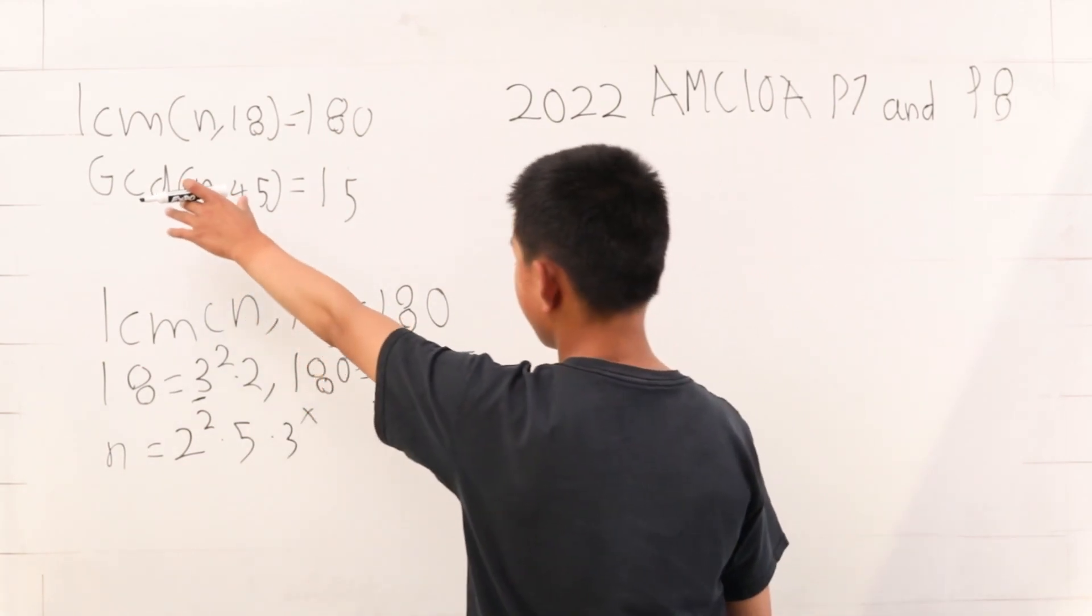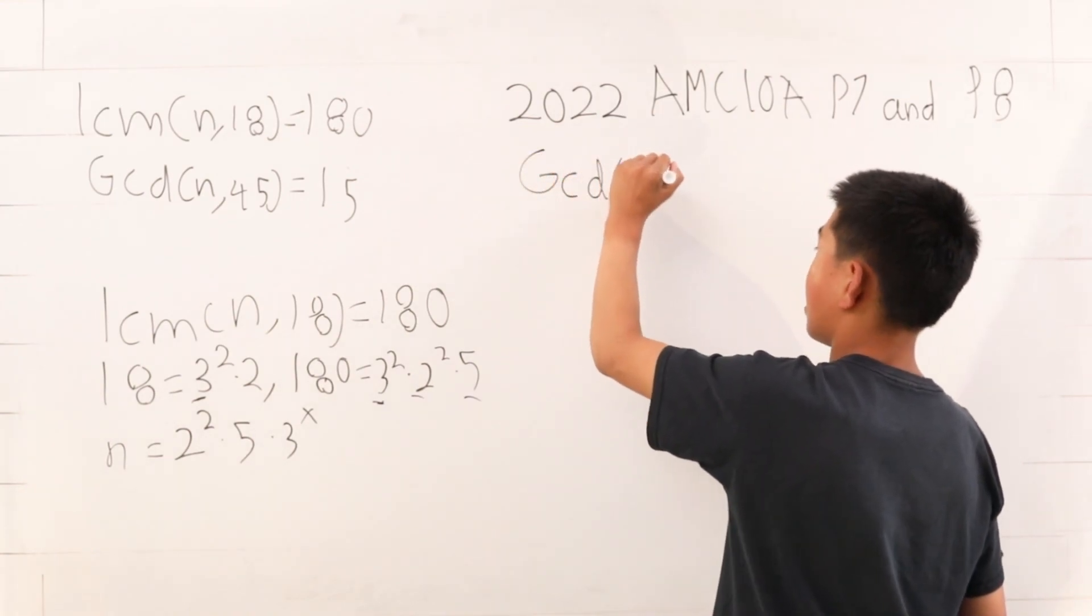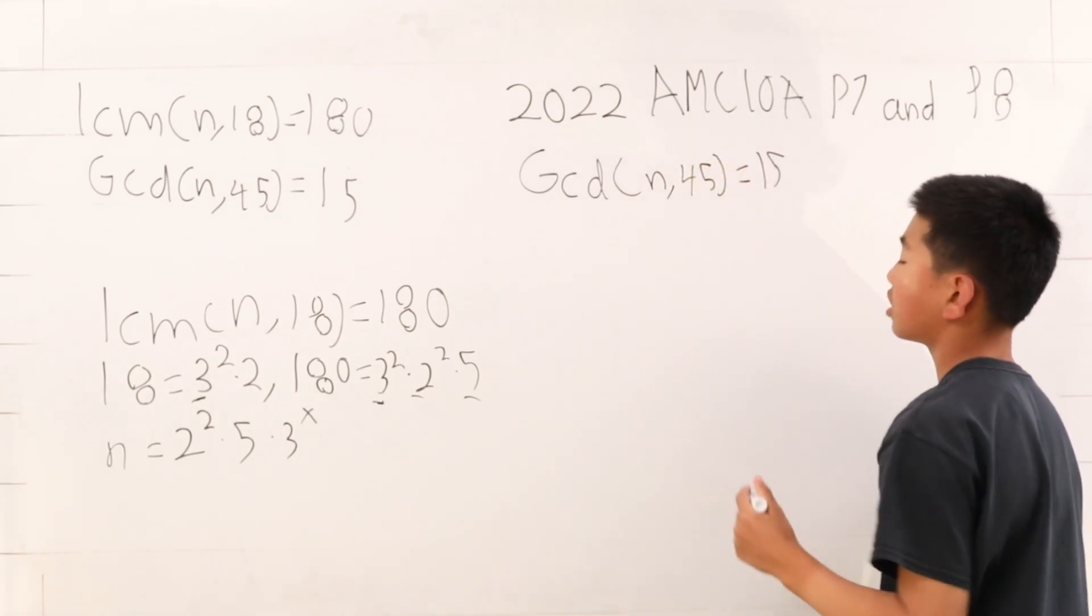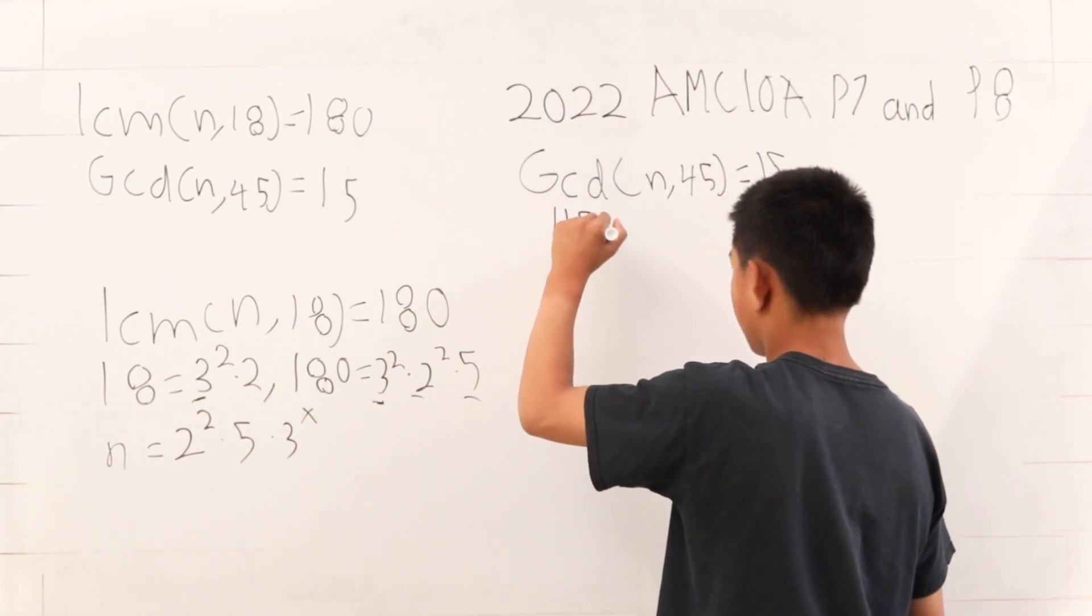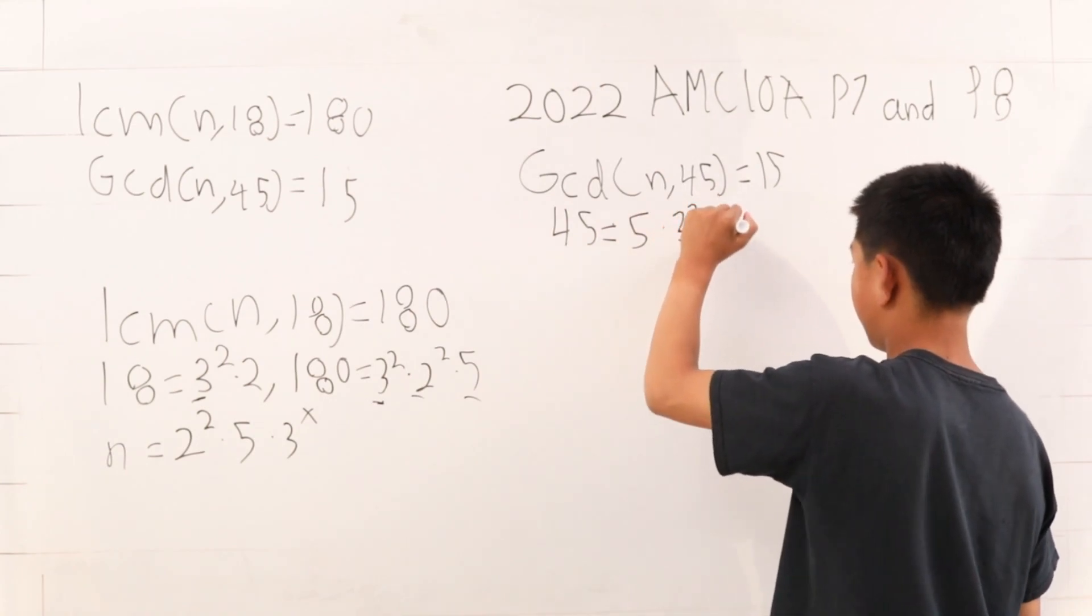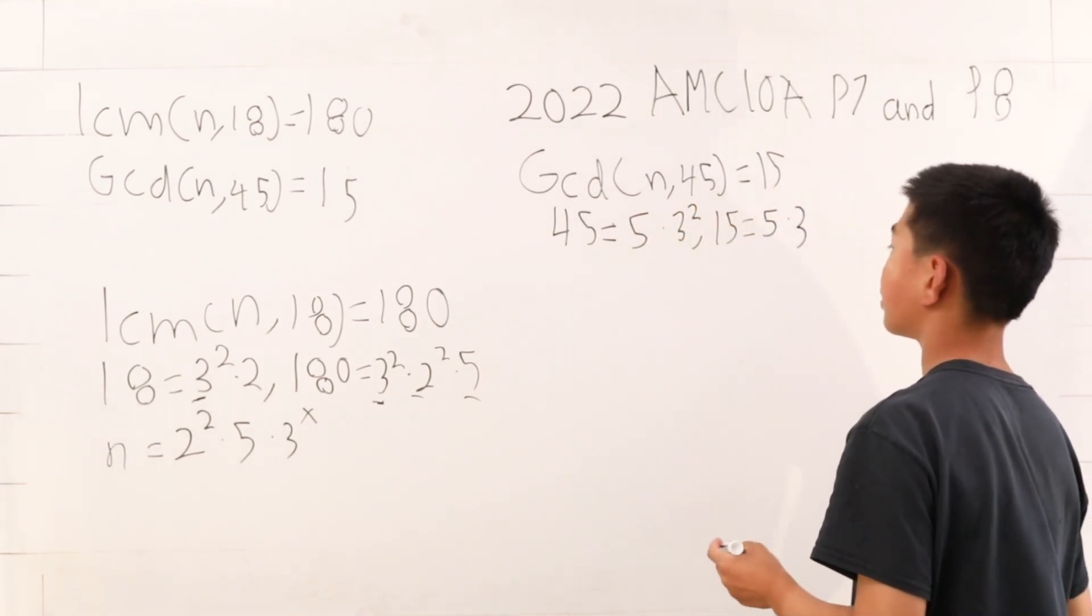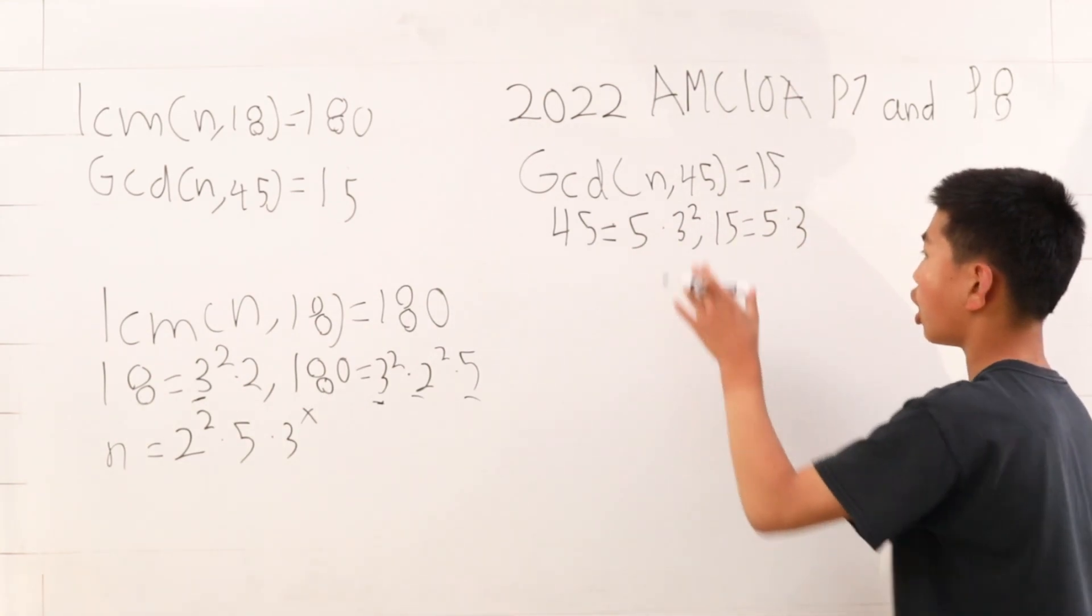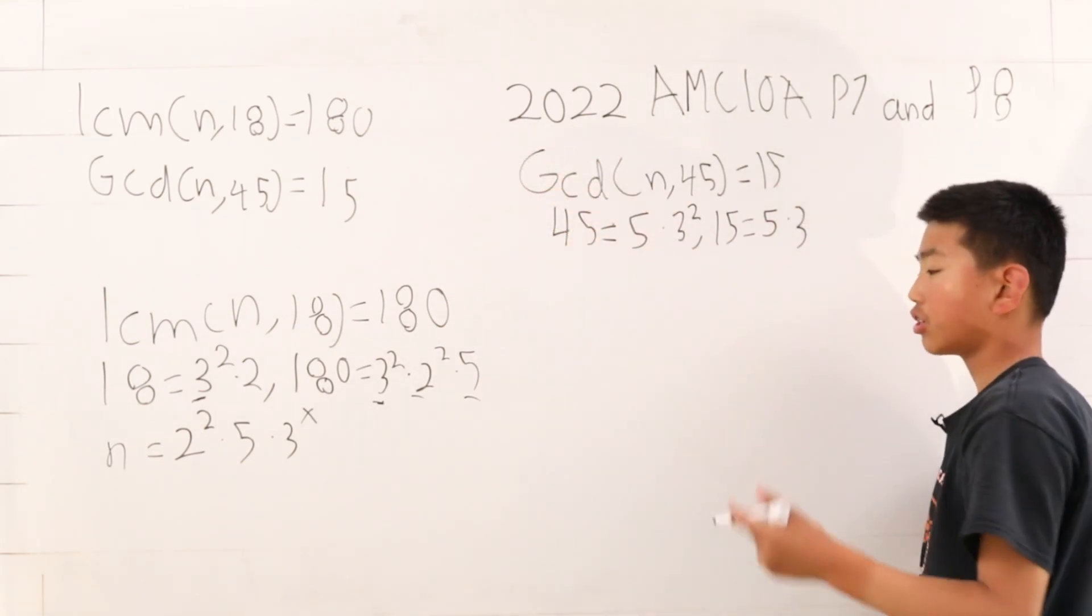Let's consider the second term. Greatest common divisor of n and 45 is 15. Once again, we use prime factorization. 45 equals 5 times 3 squared, and 15 is 5 times 3. All right, so basically it's the opposite here. This is the greatest common factor where you want to take the least common terms.